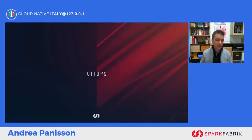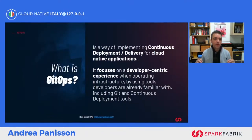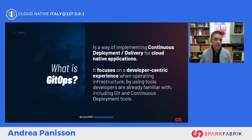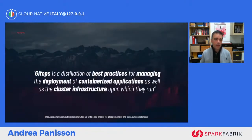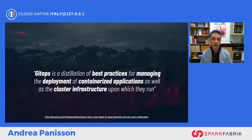Let's finally get back to where we started: GitOps. GitOps is a way to implement continuous deployment and continuous delivery for cloud native applications. It focuses on a developer-centered experience, even for infrastructure activities, because it uses tools that developers are already familiar with — namely Git and continuous deployment tools. In a more abstract form, GitOps can be thought of as a collection of best practices for managing the delivery of containerized applications and the infrastructure they run on.